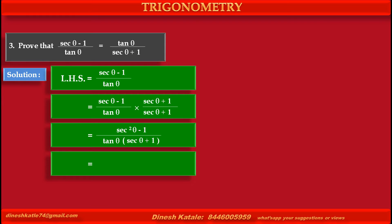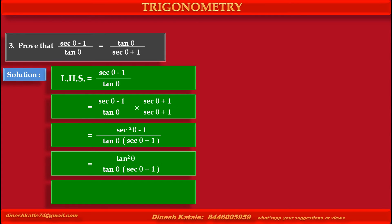This is equal to (sec²θ - 1) becoming tan²θ, upon tan θ into (sec θ + 1). Simplifying, tan²θ upon tan θ gives tan θ upon (sec θ + 1), which is equal to the required right-hand side.